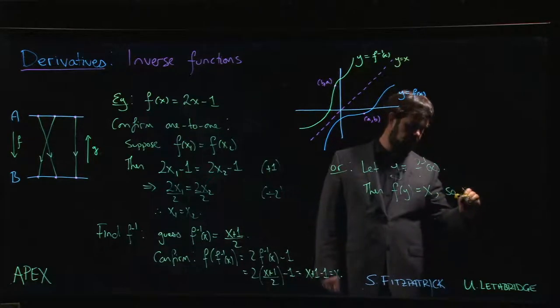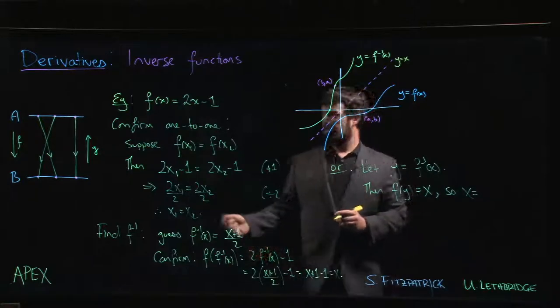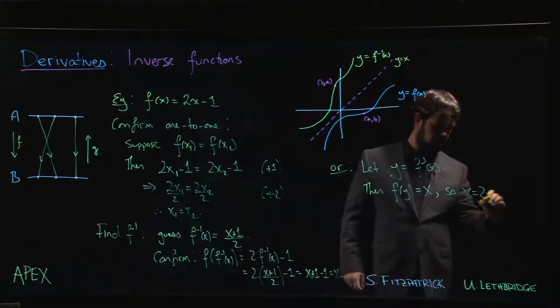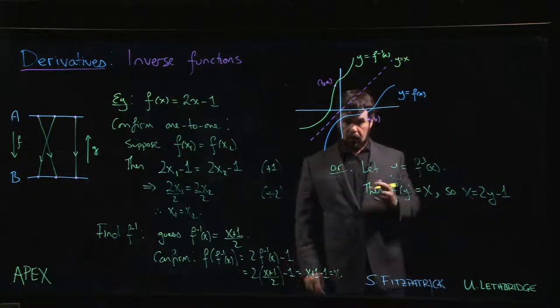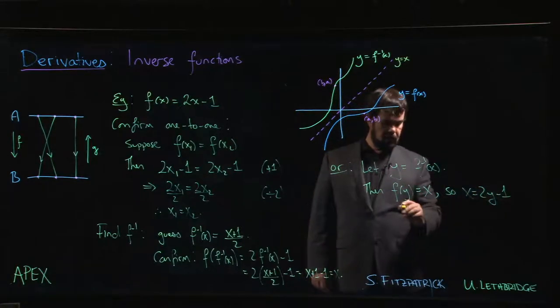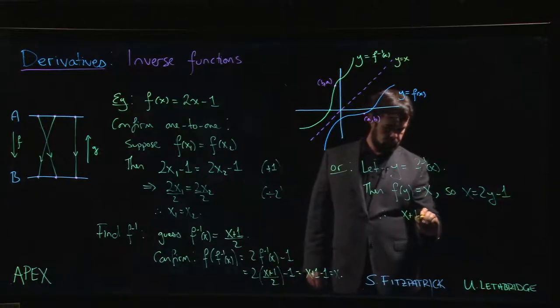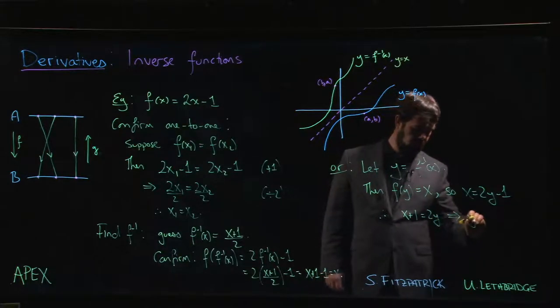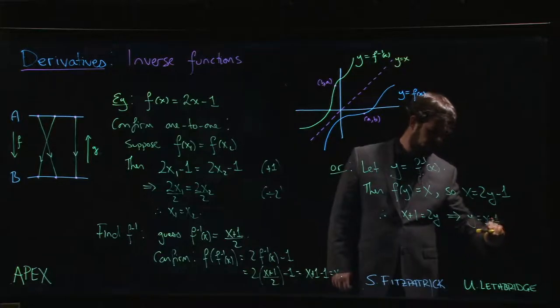So that means that x is equal to, well, what's f of y? f of y, we just replace x by y. We get 2y minus 1. Alright? But the thing we wanted was f inverse of x. We want y. So solve for y. Add 1 to both sides. That's going to imply that y is x plus 1 over 2.